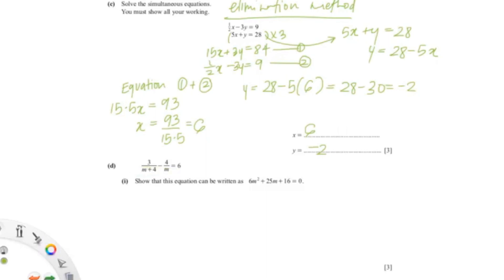For this question, I want to make the denominator the same, so I cross multiply them. So 3m/[m(m+4)] minus 4(m+4)/[m(m+4)] equals 6. So now it will be (3m-4-16)/(m²+4m) equal to 6.